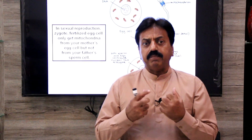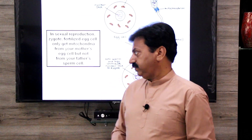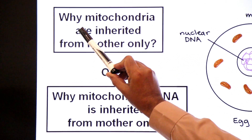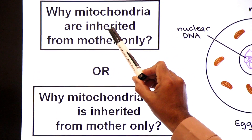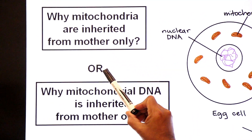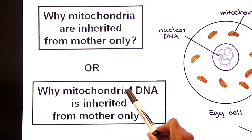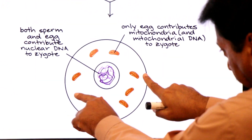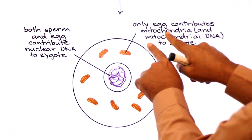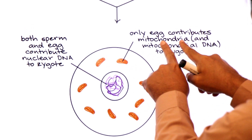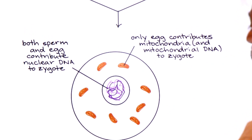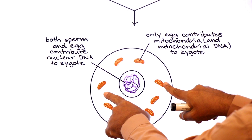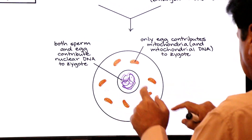Now there is a question: why is mitochondrial DNA inherited from mother only? Why are mitochondria inherited from mother only? The answer is that only the egg contributes mitochondria and mitochondrial DNA to the zygote. The mitochondria in the zygote come only from the mother, not from the father.